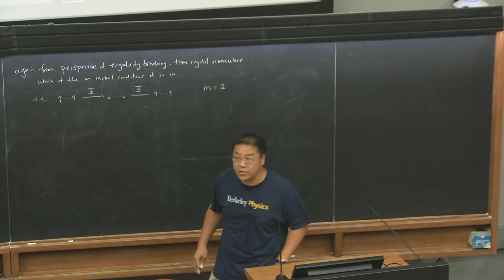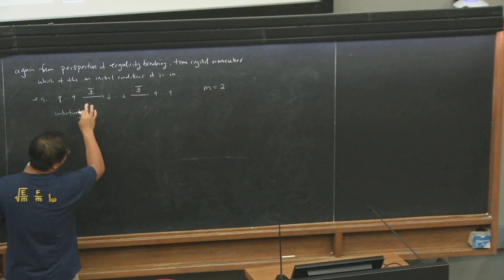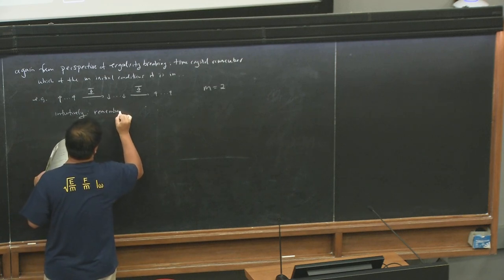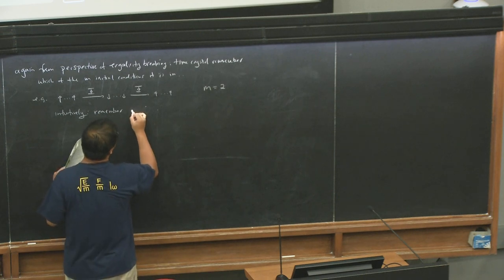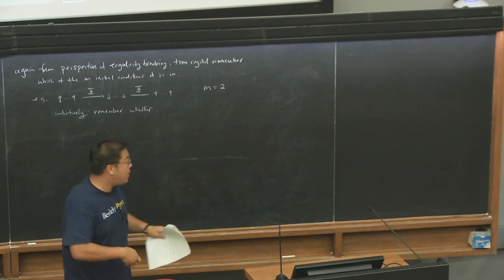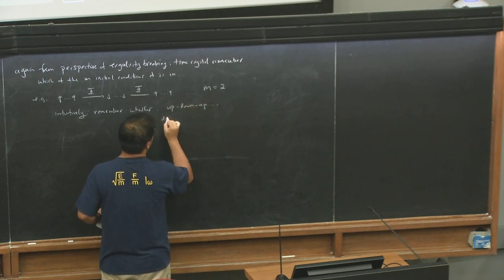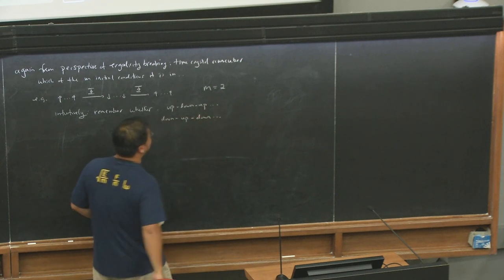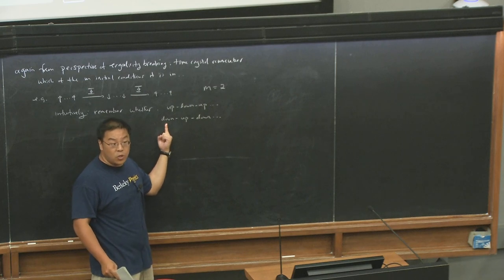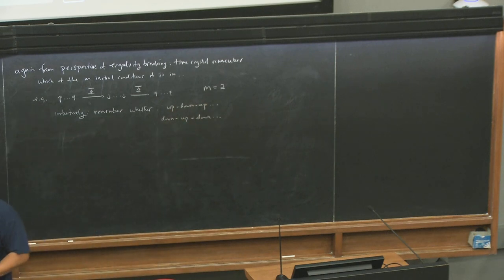That is the definition of a sub-harmonic oscillation. Intuitively, from the perspective of ergodicity breaking, the time crystal must remember which of the m initial conditions it is in — much like a ferromagnet needs to remember whether it's up or down. The time crystal must remember whether its dynamics go up-down-up or down-up-down. These are effectively two different symmetry-broken states: whether on even periods you're always up, or always down.